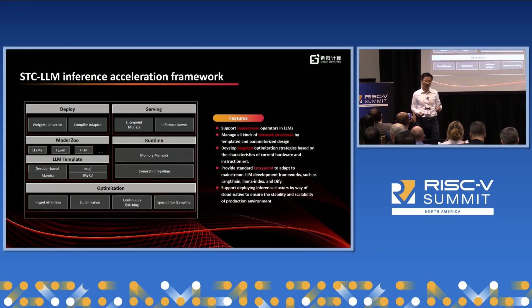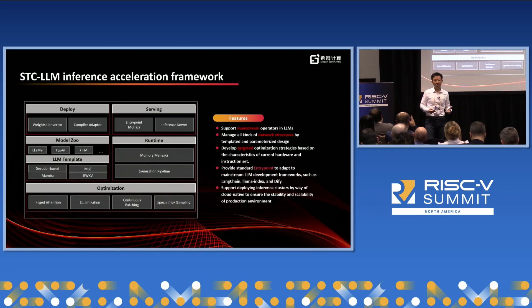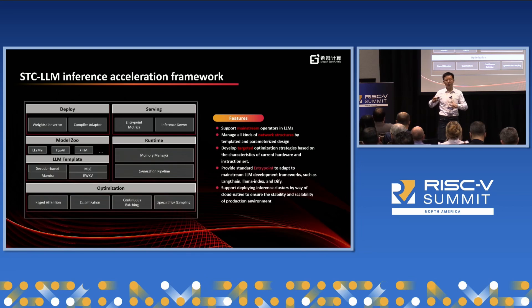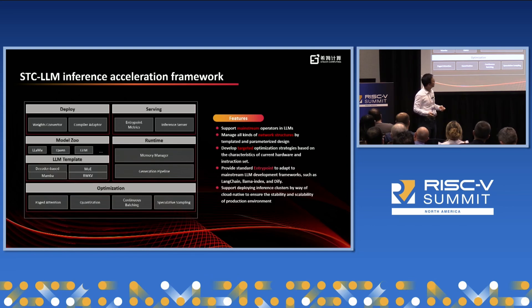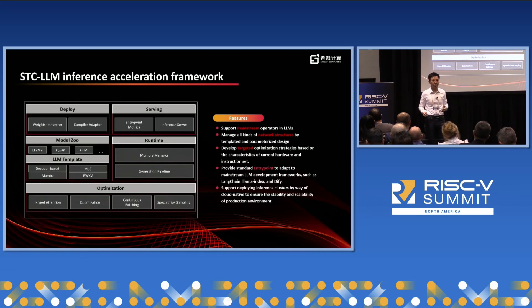Because we are an inference card provider, there are many typical challenges. The first is new LLMs emerging rapidly, making it very hard to follow the trend. The second is the large scale of model parameters, making it very hard to achieve an optimal solution. In the community, open source optimal solutions are always based on GPUs, so how to learn from these optimizations and transfer them to the NPU is our challenge. Generally, we support mainstream frameworks. A highlight is our serving capability — we provide OpenAI-style entry points and support the Triton backend to integrate into Kubernetes clusters.